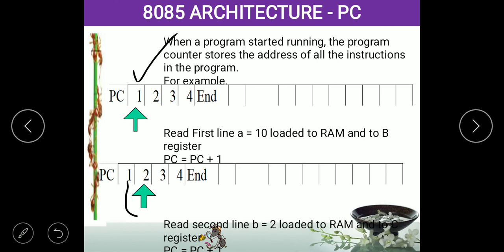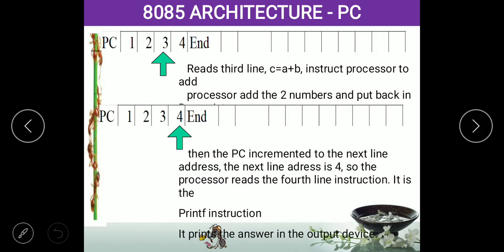After assigning A = 10, the program counter increments by 1, so the pointer moves from 1 to 2. The processor reads the data stored at address 2, which is B = 2, and assigns that value. Next, the program counter increments to 3. At address 3 we have C = A + B, so the processor adds A (which is 10) and B (which is 2), gets 12, and stores that value in memory location C.